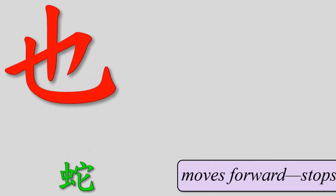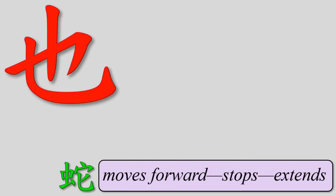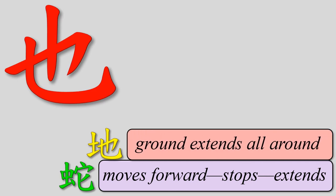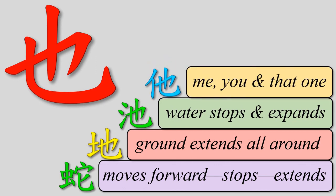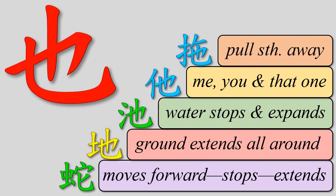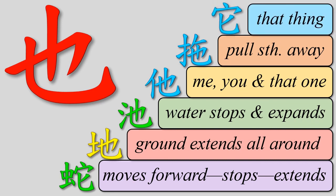And finally, here is a summary of how all these characters are related to snake-like movement. Here is our color chart with today's seven characters and their correct stroke order.